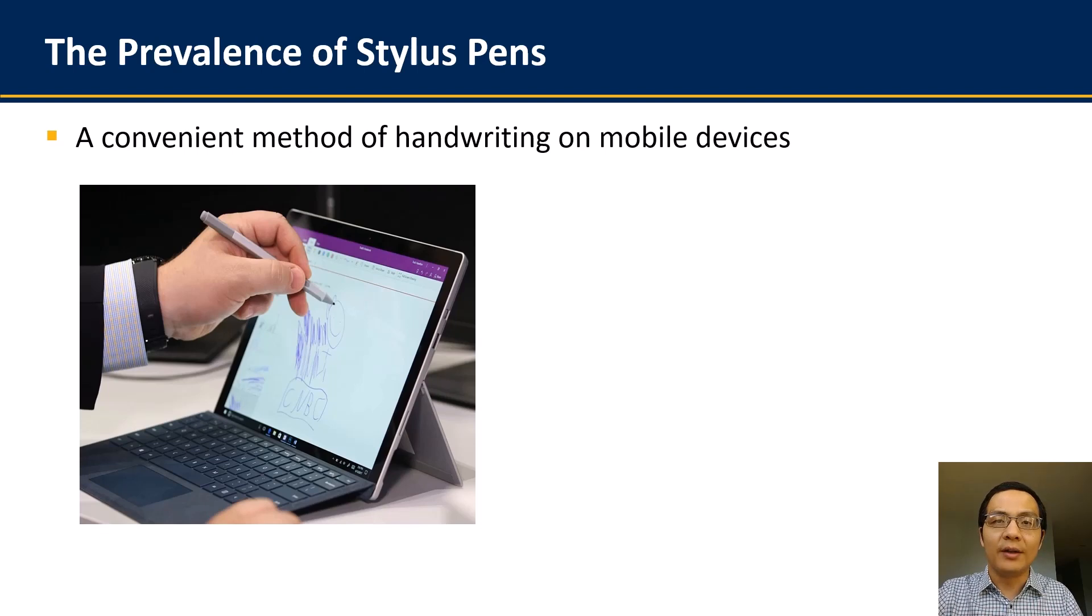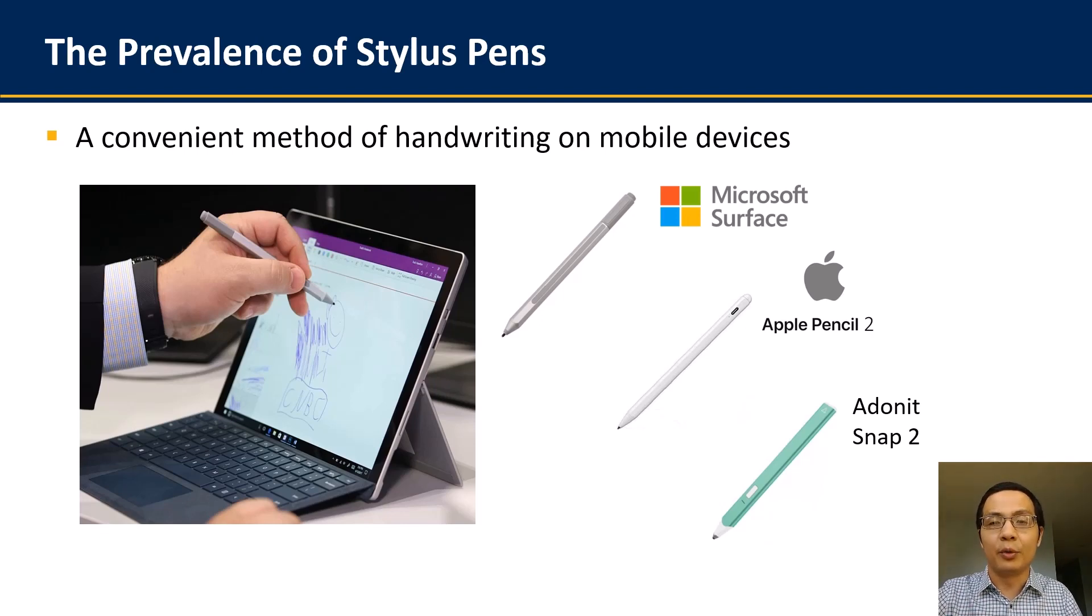Stylus pen nowadays has been widely used as an input method on today's mobile devices such as smartphones, tablets, and laptops. There are many major brands from manufacturers such as Microsoft and Apple, and also many third-party providers that produce stylus pen products with lower prices. As you can see, people can write letters that can be directly recognized and translated into texts, and they can also freely draw their designs and present them to others on the LCD screen.